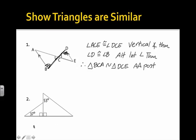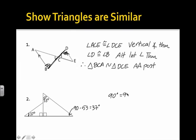Now let's look at Example 2. We have two right triangles — excuse the diagram, the markings are a bit off. We need to find out if these triangles are similar. We have an angle measure of 37 degrees and another of 53 degrees — they're not the same. But because we know the right angle measure, we can figure out the other angles. This angle is 90 minus 53, which equals 37 degrees. So we have two pairs of congruent corresponding angles: 90 degrees equals 90 degrees, and 37 equals 37. These two triangles are in fact similar.